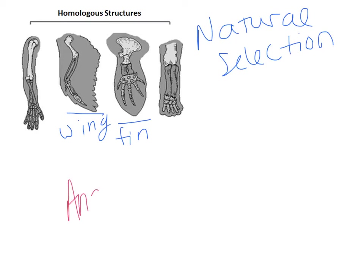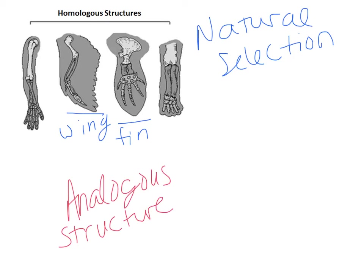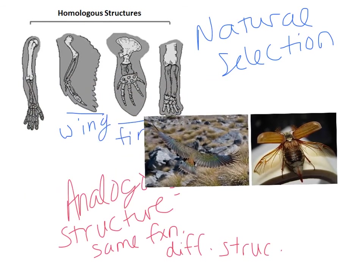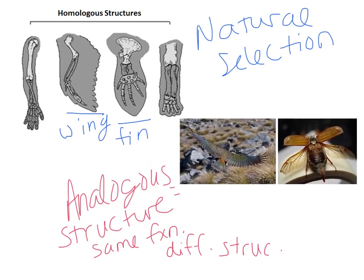It is important that we do not confuse homologous structures with analogous structures. Analogous structures do not have the same structure — they have the same function but a different structure or build. Because they do not have the same structure, they do not necessarily show evidence of ancestry. The example here is wings used for the same purpose: the bird flying and the insect flying. Same function, but their structural build is very different. Homologous structures: same structure, different function. Analogous structures: same function, different structure.